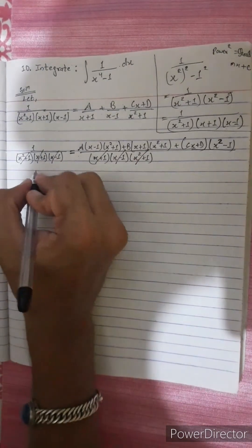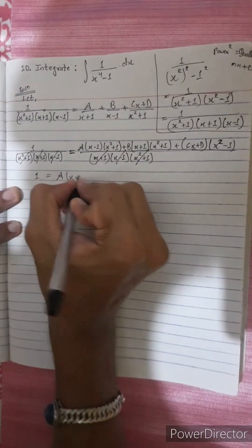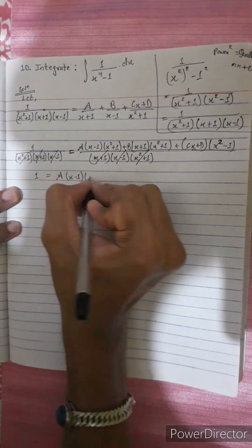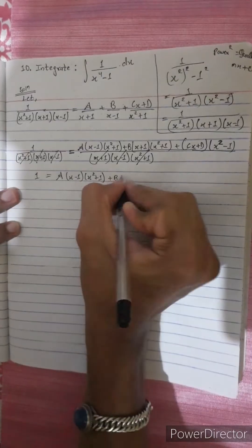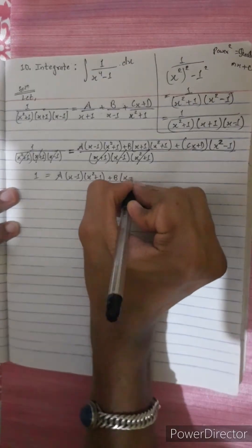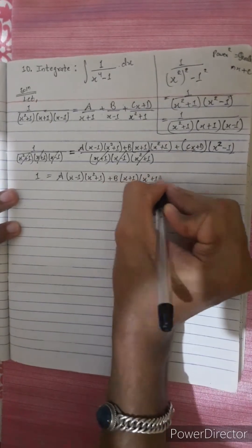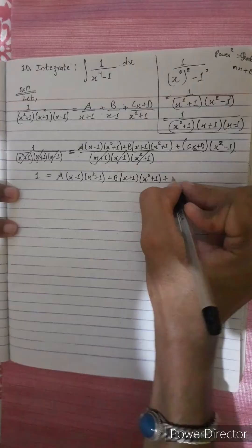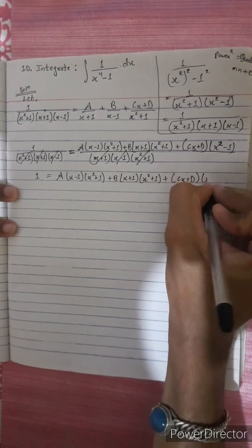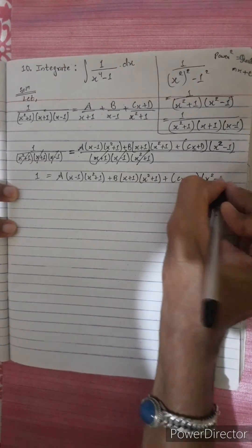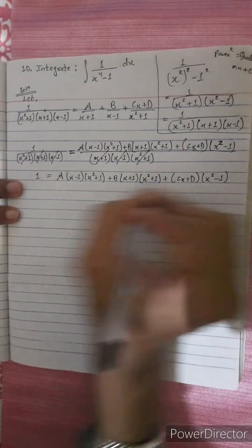Now we have the main equation: 1 equals A times (x minus 1)(x² plus 1) plus B times (x plus 1)(x² plus 1) plus (cx plus d)(x² minus 1).